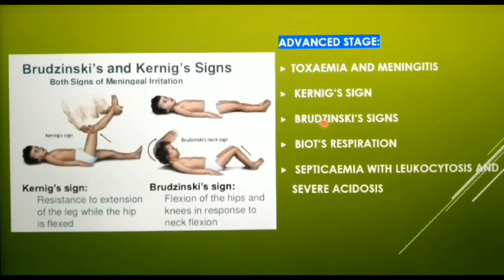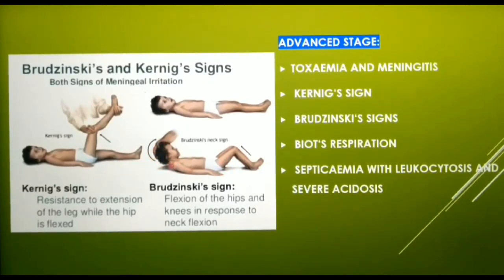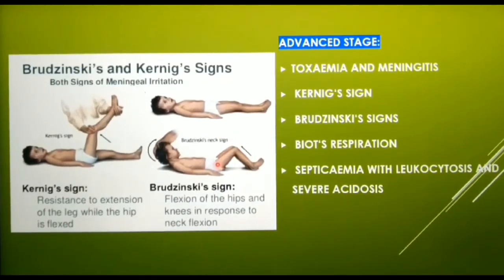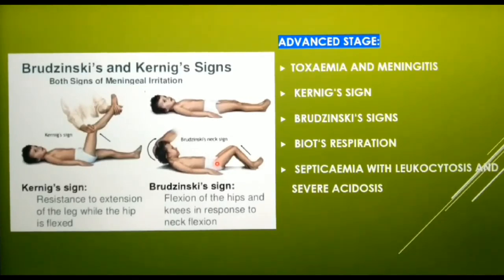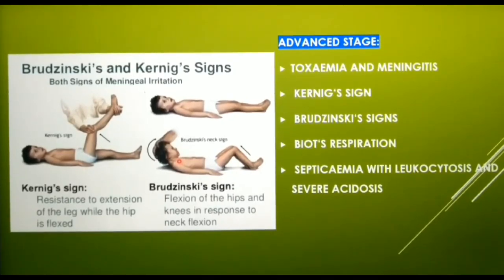A positive Brudzinski's sign is the passive flexion of the neck causing flexion of both legs and thighs. Another positive sign is Biot's respiration — an abnormal pattern of breathing characterized by regular deep inspirations followed by a period of apnea, seen in patients with acute neurological diseases. There is also septicemia with leukocytosis and severe acidosis with a positive blood culture. Unless treated early, the prognosis is poor.